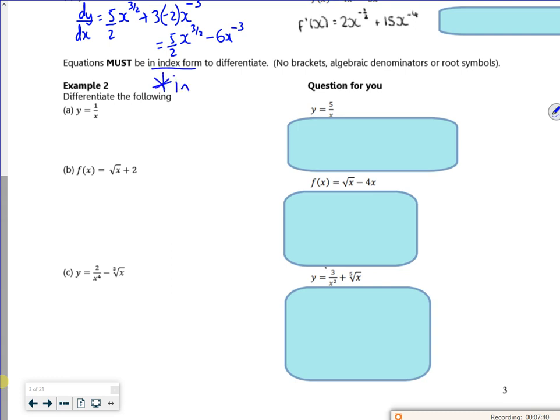Right. So I'm going to put it in index notation first. It says it there. So this would become x to the power minus 1. So when I differentiate it, it becomes minus 1, x to the minus 2.